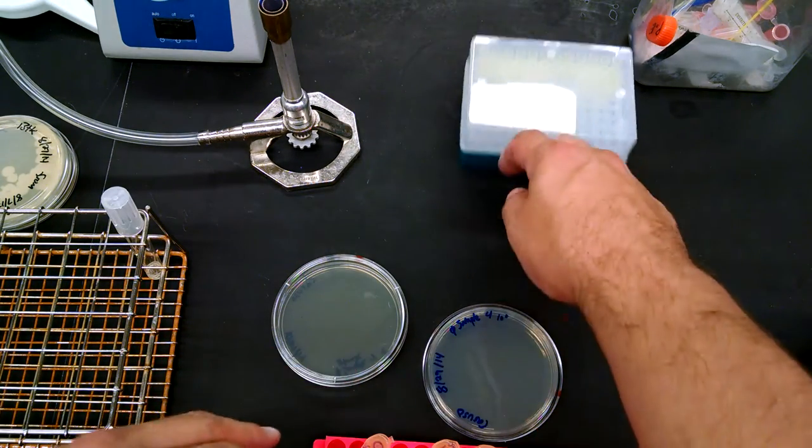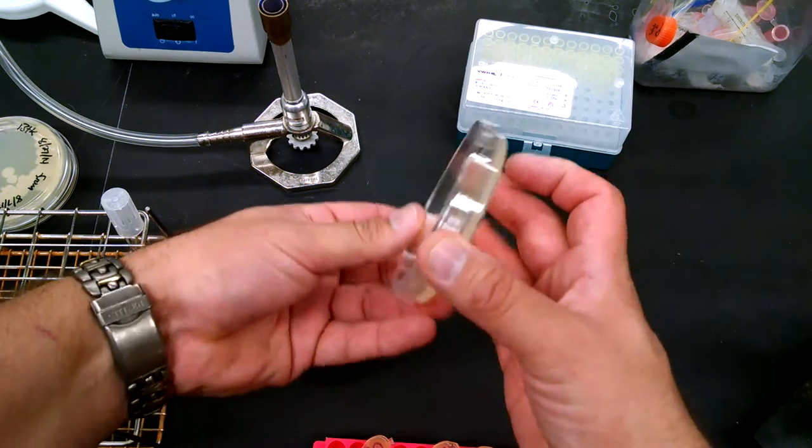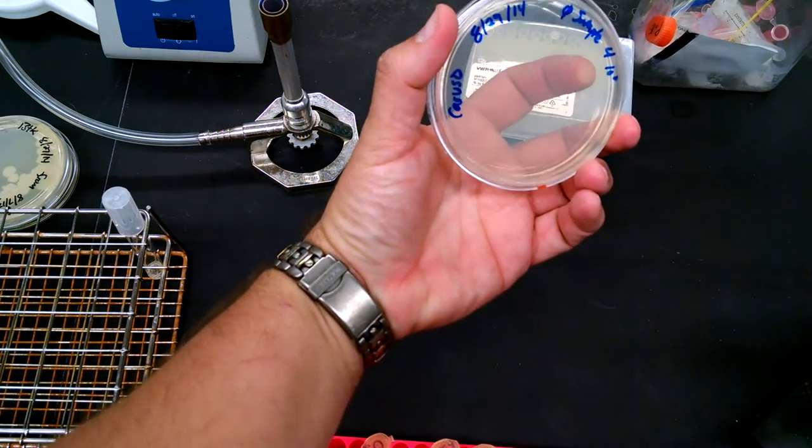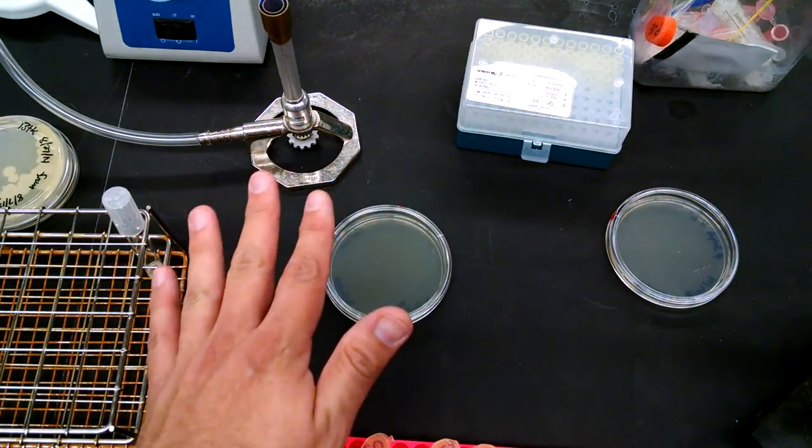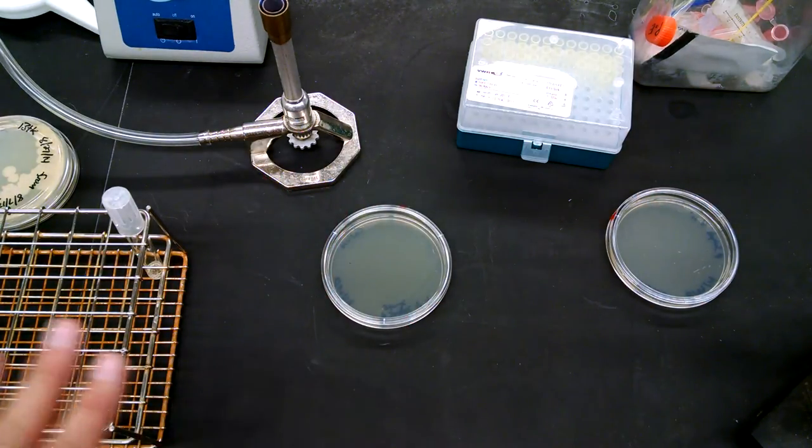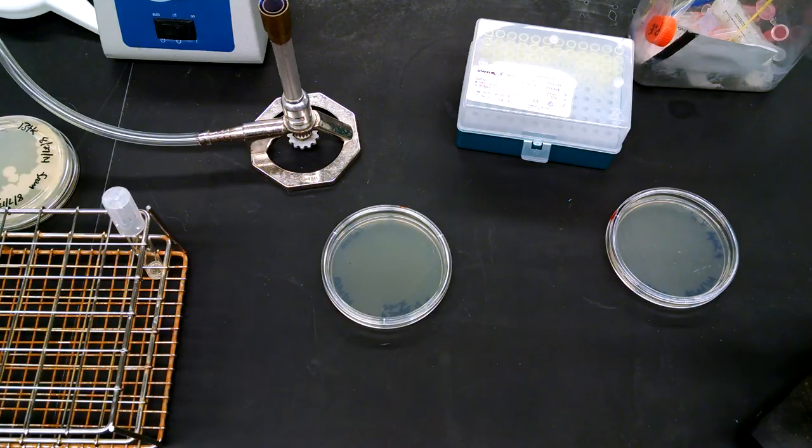All right. So now we've got our plates. They've been labeled. So we're ready to go. So this one is the dilution. So we're not ready for that one. This one's got the phage already streaked on it. We did that in the last video. So we now need a top agar. So let me grab that.